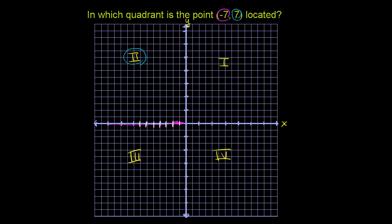So this is x equals negative 7, and then we have to go up 7, because y equals positive 7. So 1, 2, 3, 4, 5, 6, 7. So the point (-7, 7) is right over here. Clearly lies in the second quadrant.